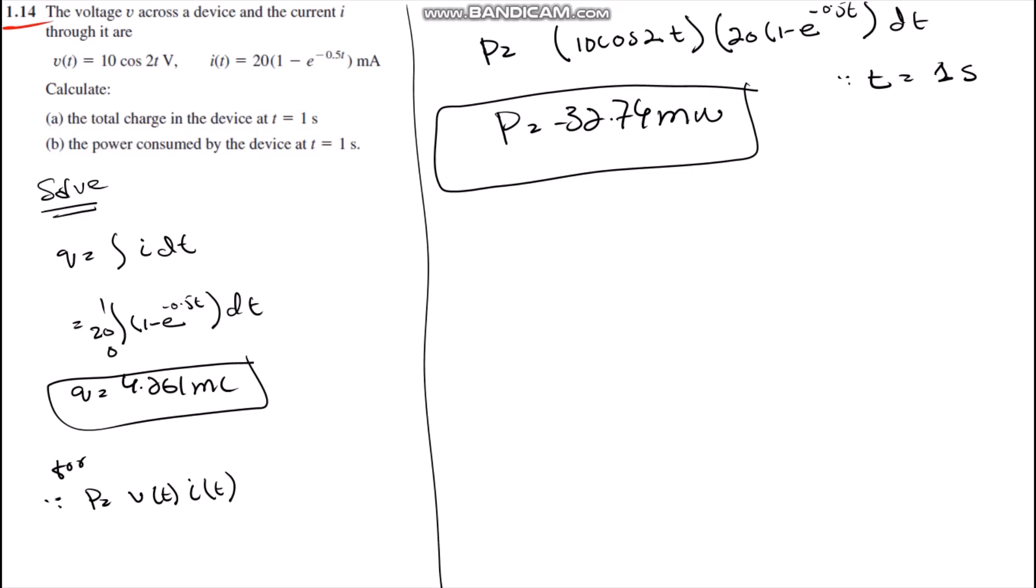In this question the voltage is given along with the current which are shown on the screen. The question is asking to find the total charge at time equals one second and the power consumed by the device at time equals one second.